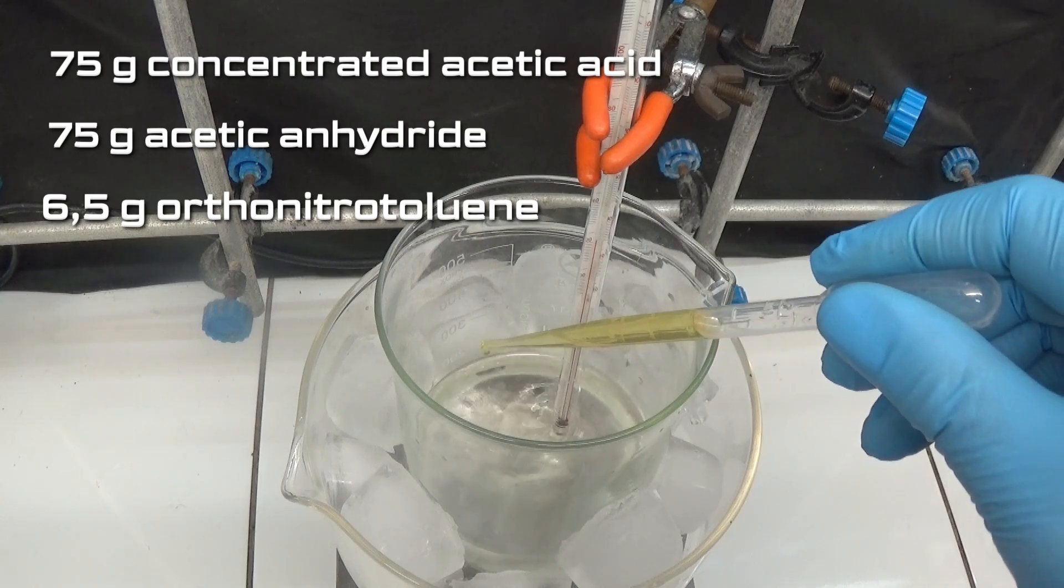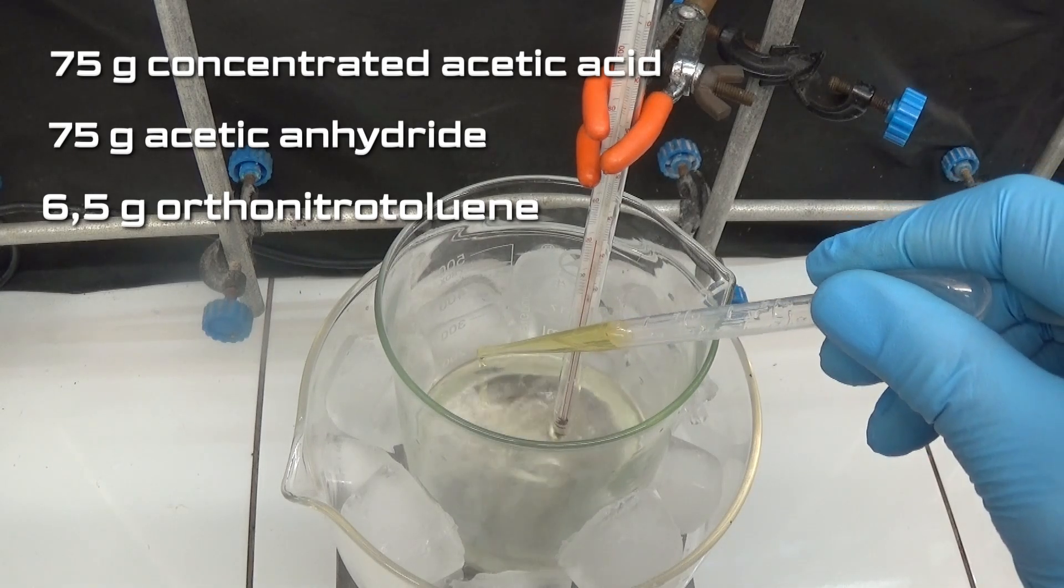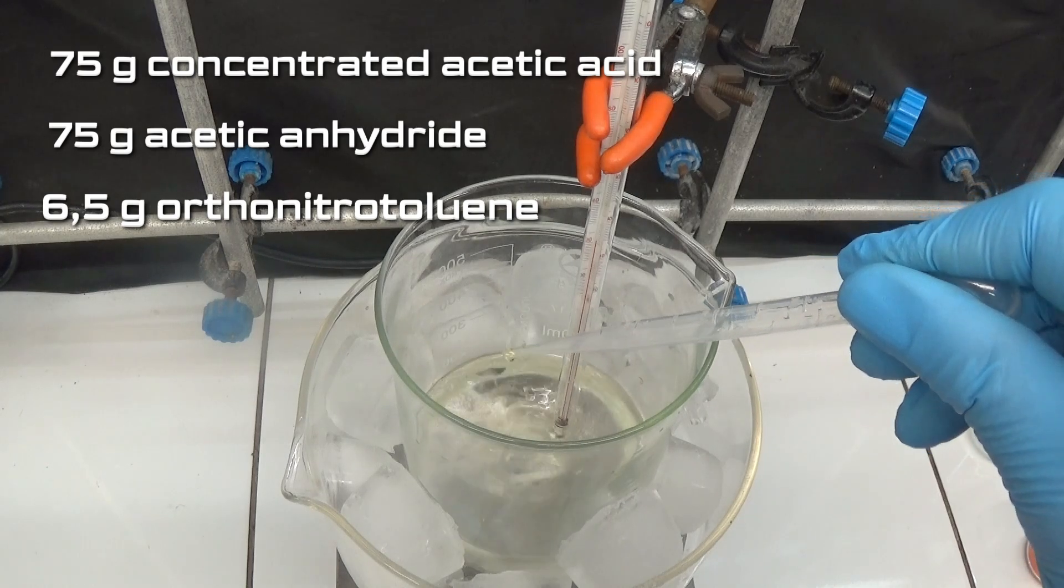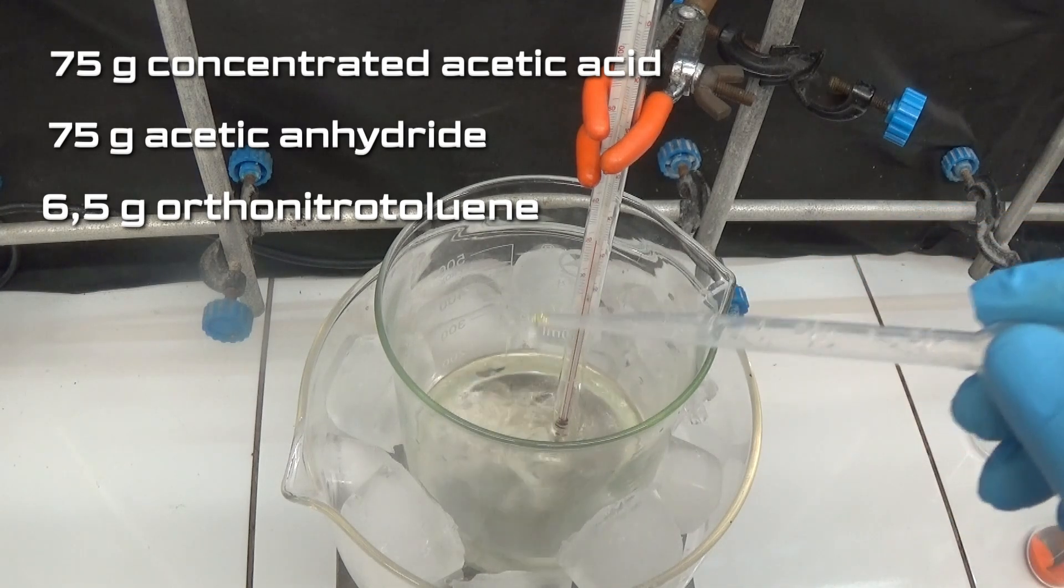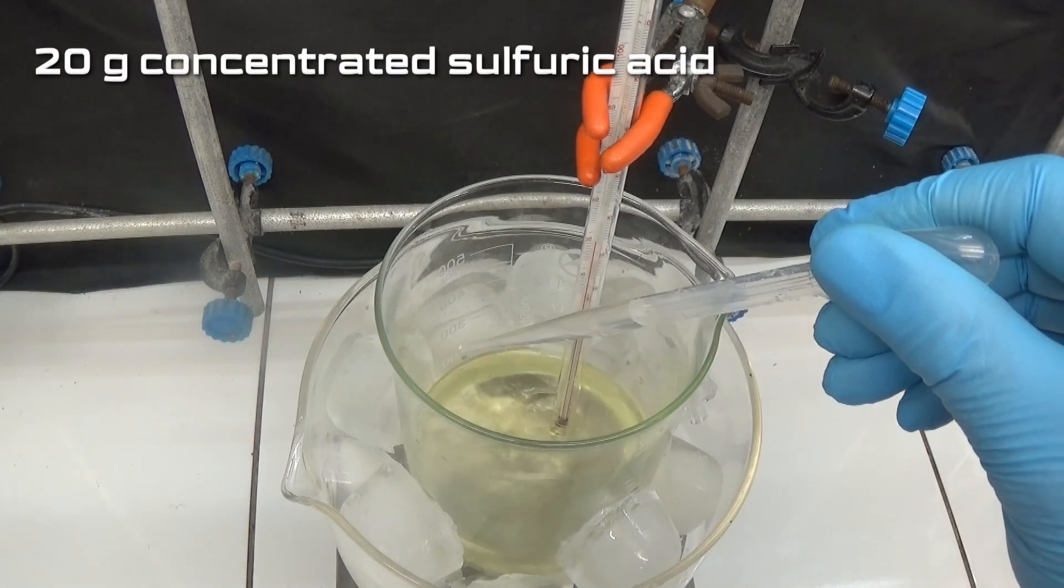6.5g of ortho-nitrotoluene. Add slowly 20g of concentrated sulfuric acid.